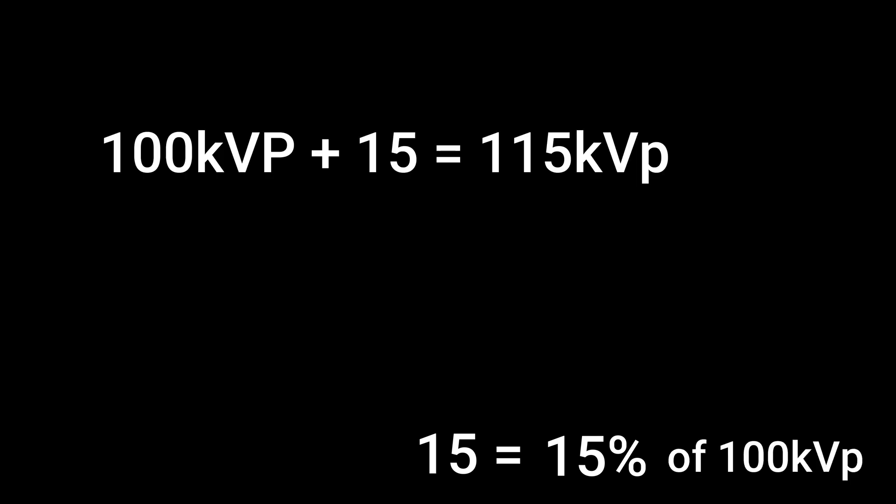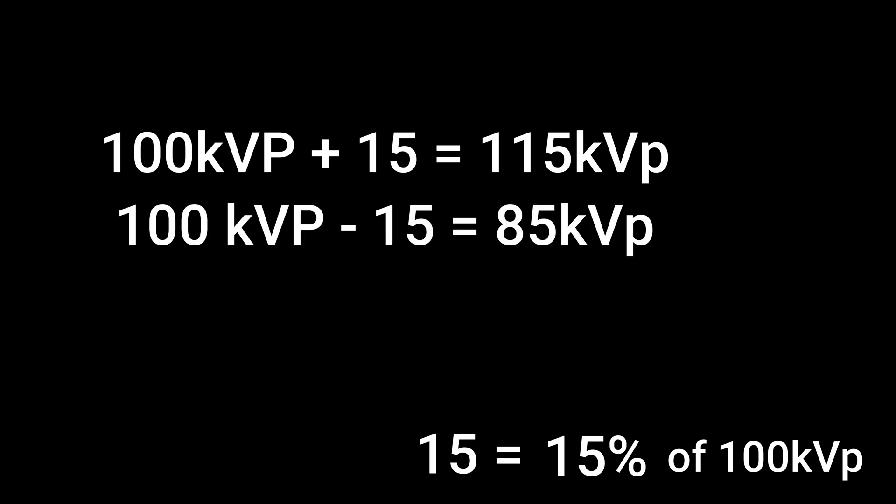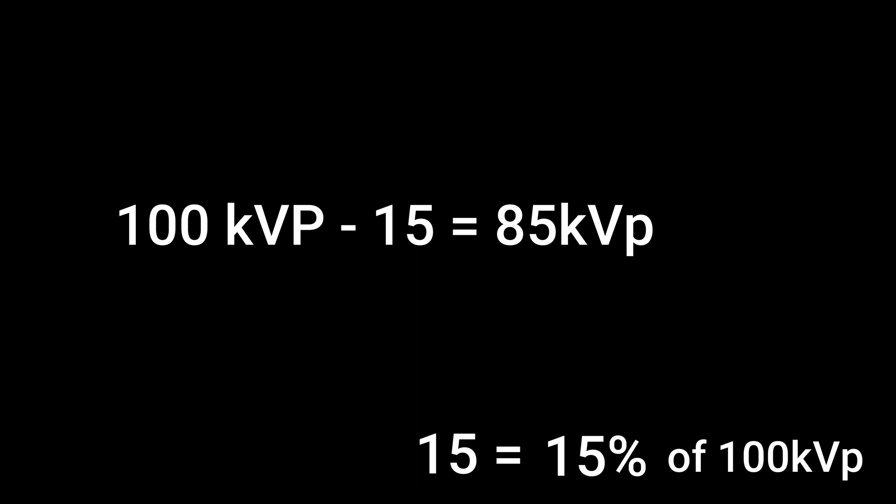Now let's put this back in our formula. 15 is 15% of 100. So if you increase 100 kVp by 15%, you have 115 kVp. If you lower 100 kVp by 15%, you subtract 15 and you have 85 kVp.